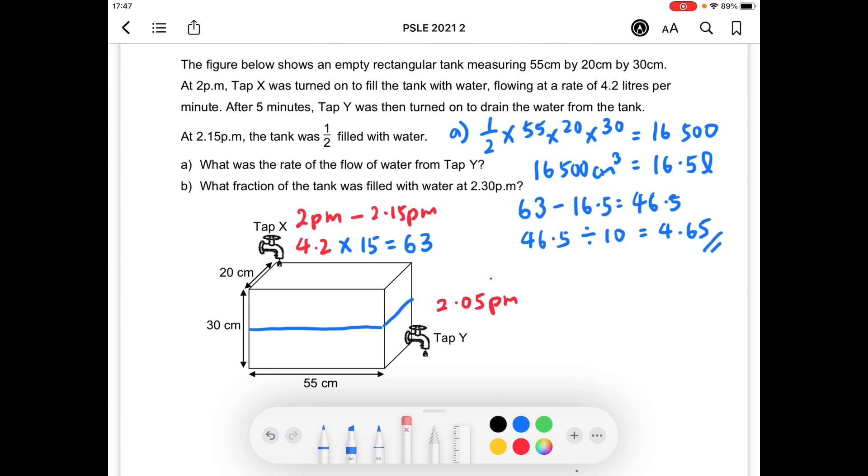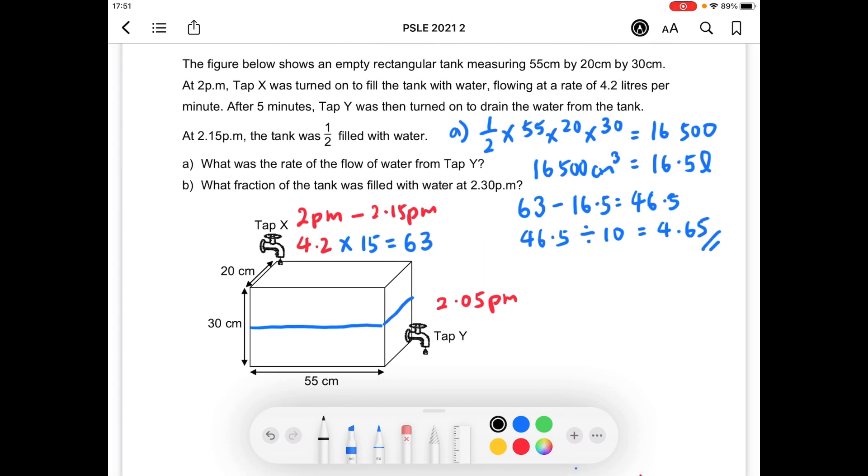As for part B, what fraction of the tank was filled with water at 2:30 p.m.? Based on the answer in part A, we know that 4.65 liters of water will flow out from Tap Y per minute. But 4.2 liters of water will flow into the tank from Tap X.